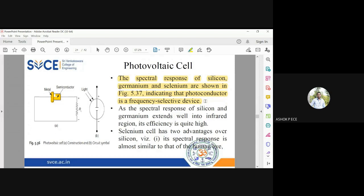The spectral response extends well into the infrared region and the efficiency is quite high. Silicon and germanium are used, but predominantly selenium is preferred because its spectral response is similar to the human eye. All visible light can be used in a selenium cell, as the human eye is sensitive to visible light but cannot see infrared and UV wavelengths.